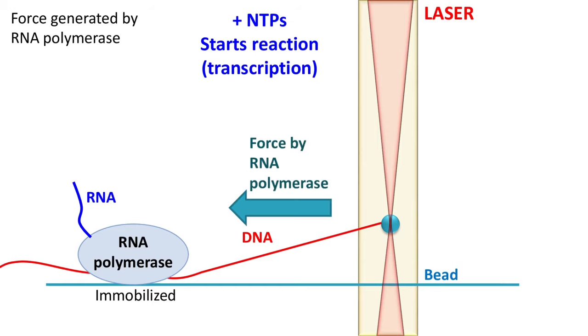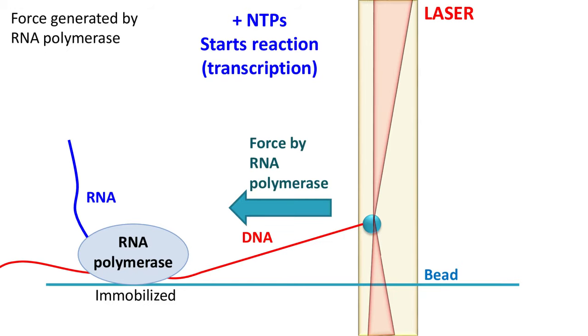As the transcription continues, the RNA polymerase pulls the DNA as well as the bead with which the end of the DNA is attached. Here, the RNA polymerase is pulling the bead towards the left. Because of the force of RNA polymerase, the bead undergoes displacement and it reaches a point where the force generated by RNA polymerase becomes equal to the optical force.